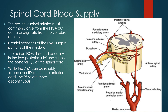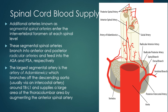The anterior spinal artery is reliably traced over its entire course, whereas the posterior spinal arteries are somewhat more discontinuous. Additional arteries known as segmental spinal arteries enter the intervertebral foramen at each spinal level. These segmental arteries branch into anterior and posterior radicular arteries and augment the anterior and posterior spinal arteries. The largest segmental artery is the artery of Adamkiewicz, which branches off the descending aorta — usually via an intercostal artery — around T9-L1, and supplies a large portion of the thoracolumbar area.